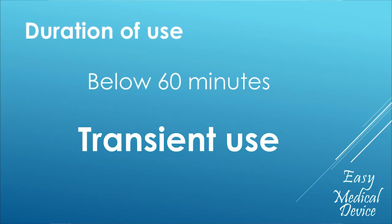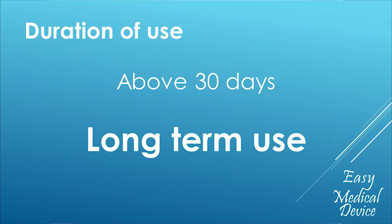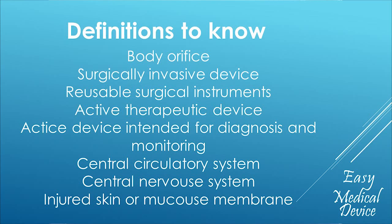There are some parameters you have to understand. First, it's the duration of use: if your product is used less than 60 minutes, it's transient use; between 60 minutes and 30 days, it's short-term use; and more than 30 days, it's long-term use. There are also a bunch of definitions you have to read — definitions about orifices on the body, what exactly is a surgical instrument, what is an active therapeutic device, etc. My advice is to read them, so when you arrive at a rule using one of those terms, you know there is a definition for it.